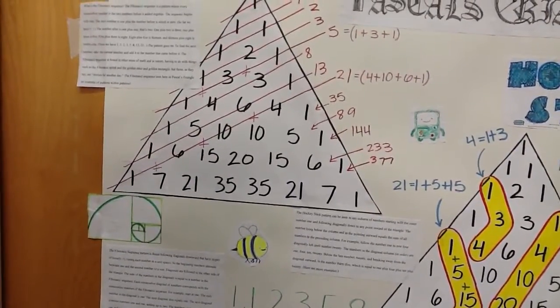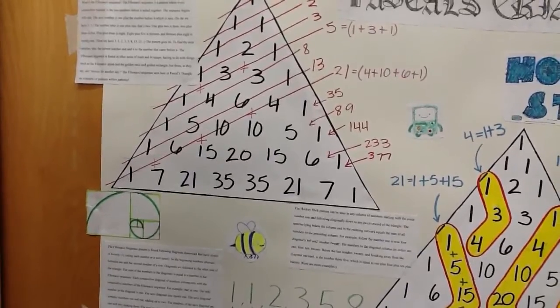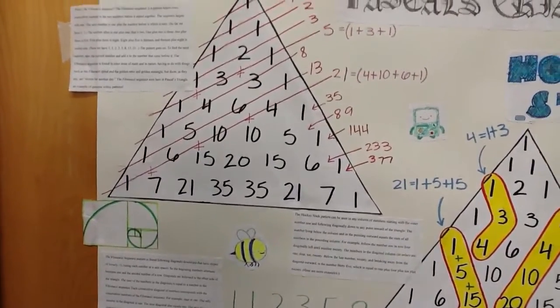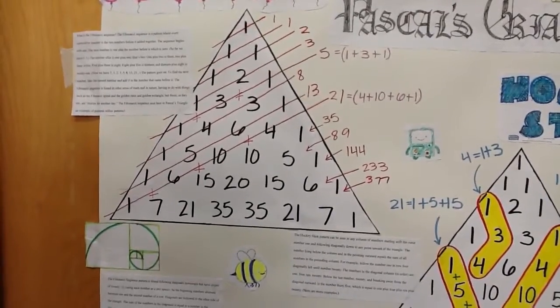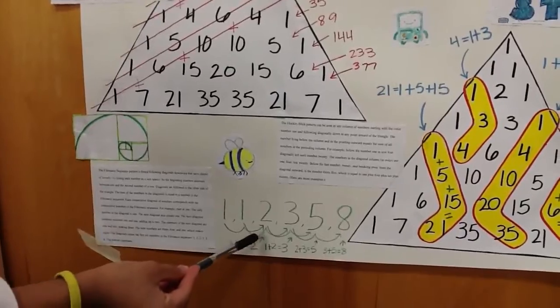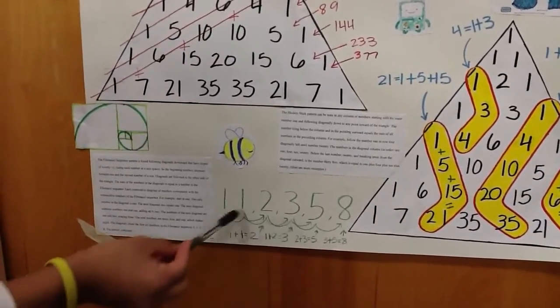So what is the Fibonacci sequence? It's a pattern where every consecutive number is two numbers before it added together. For example, 1, and then 1 plus 0 is 1, then 1 plus 1 is 2, 2 plus 1 is 3, so it keeps going.